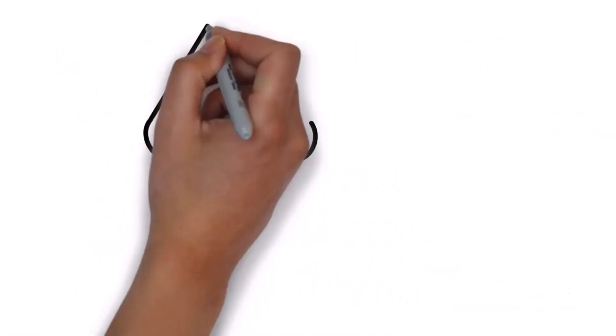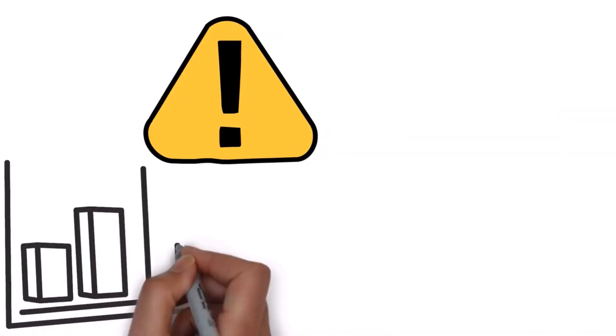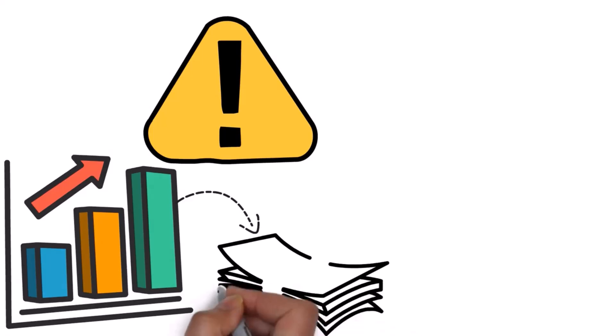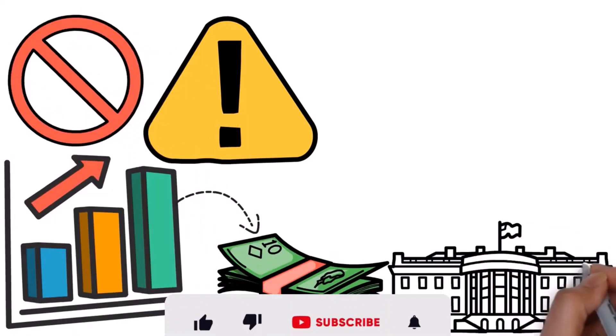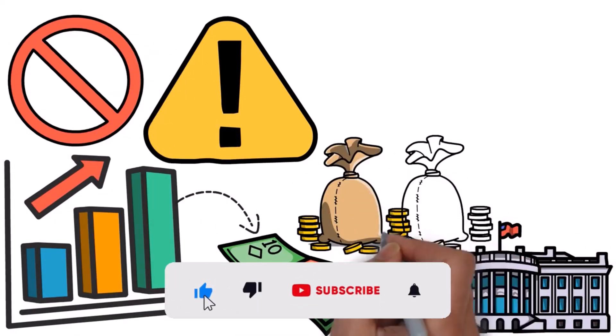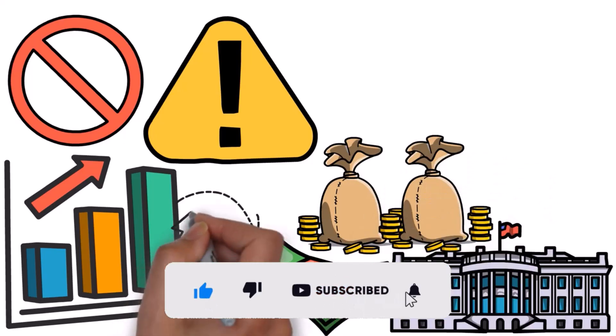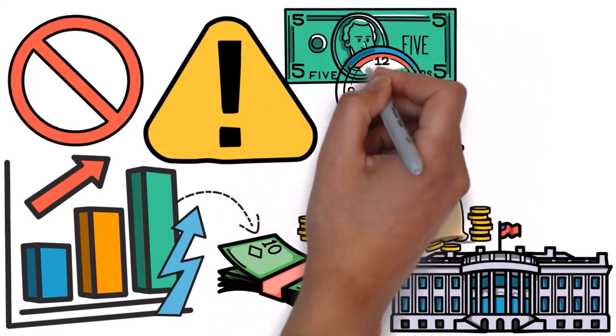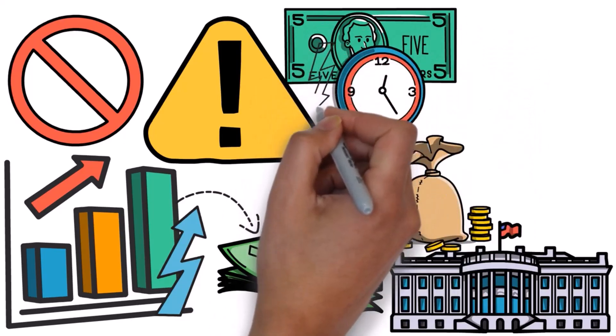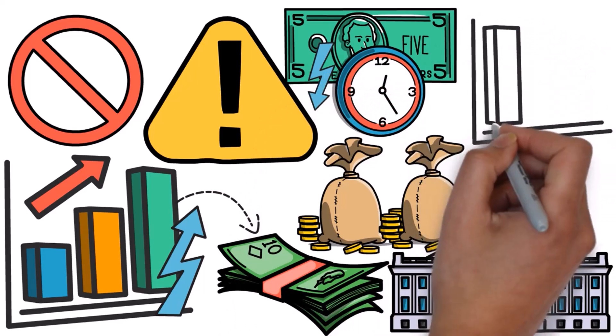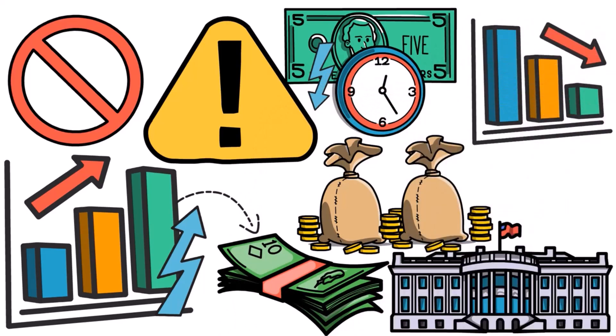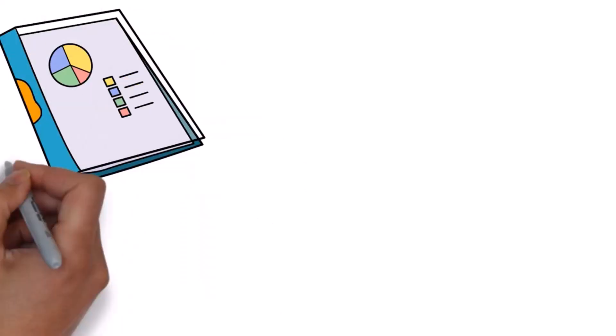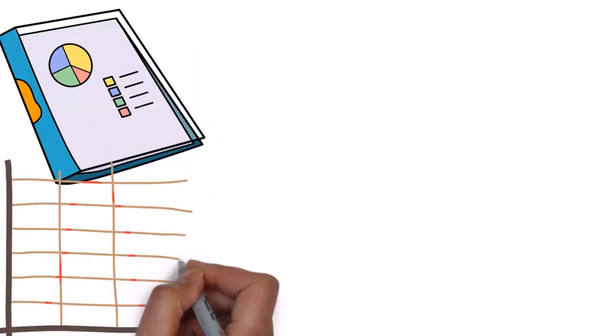Now here's the tricky part. Even though they've been raising interest rates to get people to borrow less money, the big problem is that it hasn't started working yet. The government has been borrowing a ton of money and so have regular people. But because interest rates are going up and the printing of new money is slowing down, there's actually less money in the economy now. This is happening faster than it has in a long time, almost like what happened during the Great Depression.